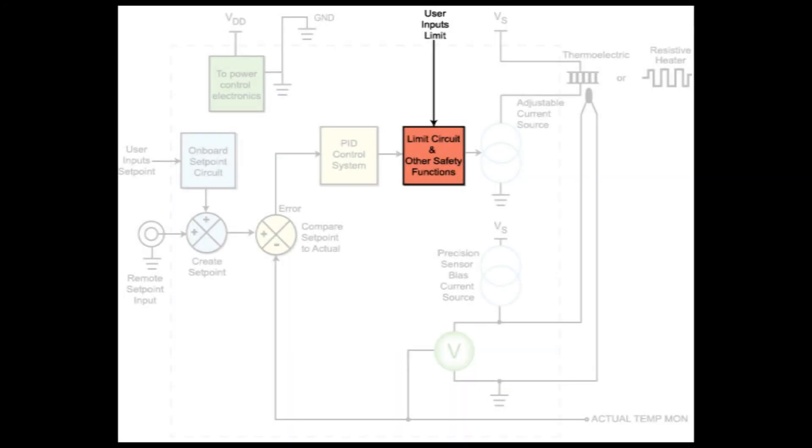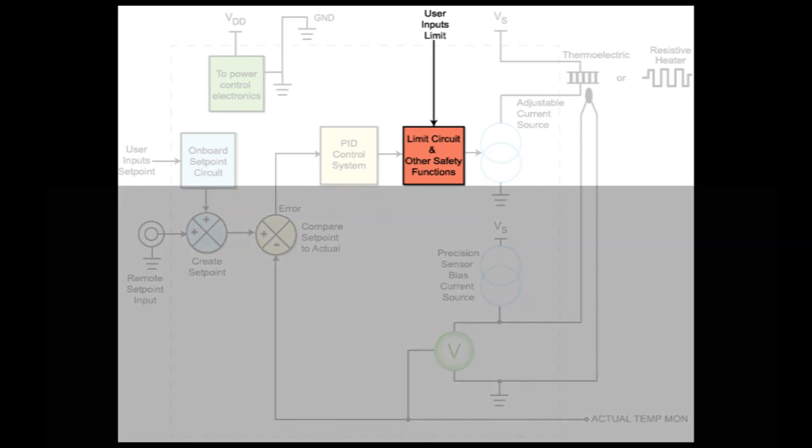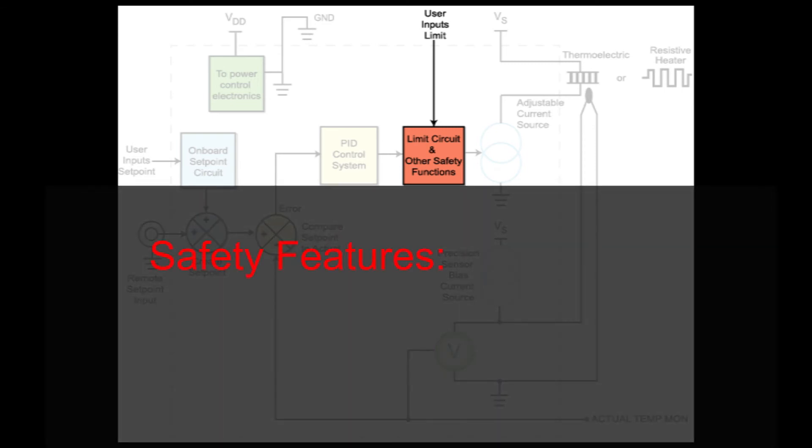Thermoelectrics and resistive heaters are sensitive to overpowering, but they are robust with respect to fast changes in current or voltage. Safety features of the temperature controller may include a thermal runaway condition indicator. Temperature limits, both high and low, trigger indicators or shutdown output current. Default shutdown conditions may exist that will either maintain the load at room temperature or disable output current in the event that the set point voltage attempts to go out of range.